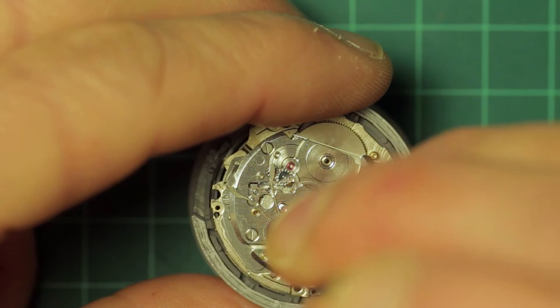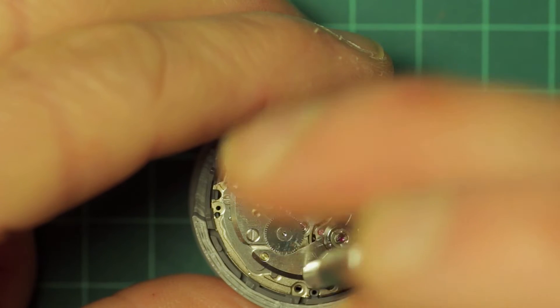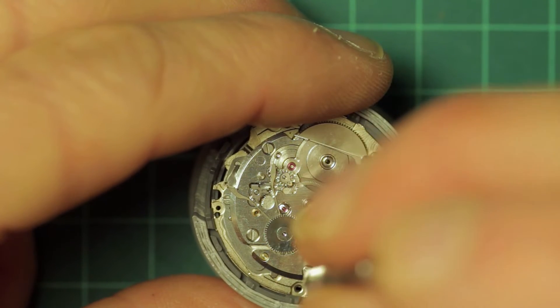And here I'm removing the balance cock. Ordinarily this would be the first component I removed after removing the automatic works.